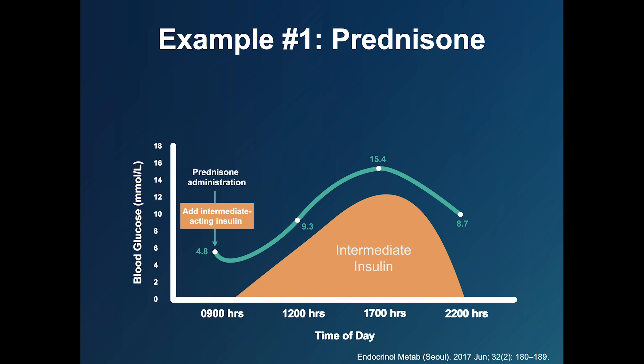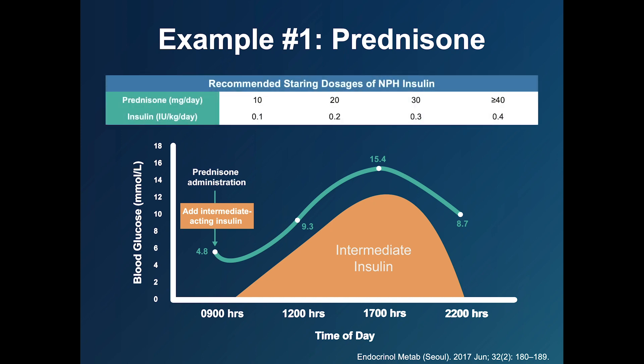Typically, patients will be started on low doses of insulin, blood glucose levels will be observed, and then insulin dosages will be titrated upwards until target evening blood sugars are reached. A table of recommended starting dosages of NPH insulin is provided to treat prednisone-induced hyperglycemia. Please keep in mind that insulin dosage will need to be adjusted and will vary between patients.